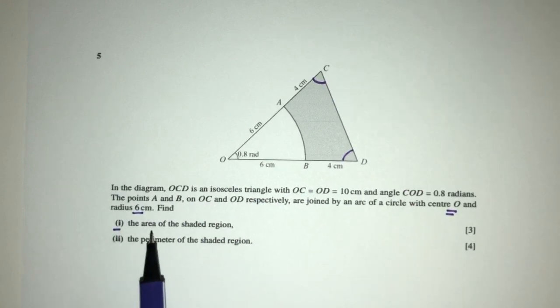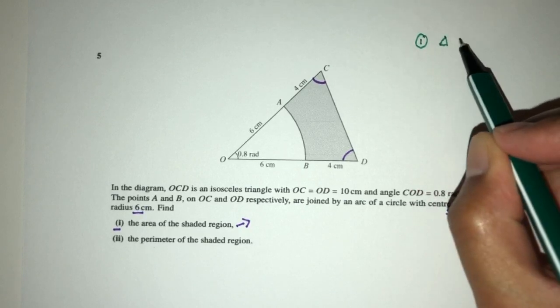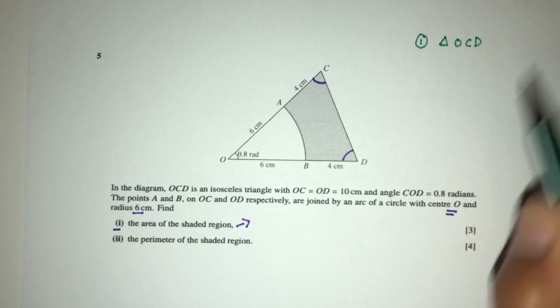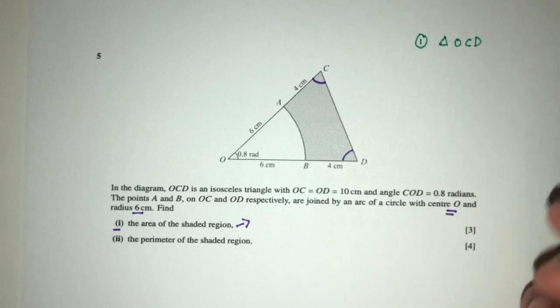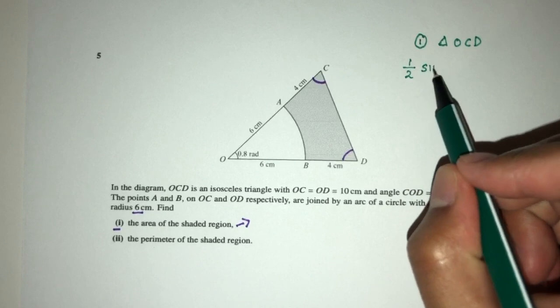Now part one, we have to find the area of the shaded region. So by observation, to find this area, we must first find the area of the whole thing. So number one, we have to find the area of triangle OCD. We can simply use our formula, which is half times sine of the angle in between,